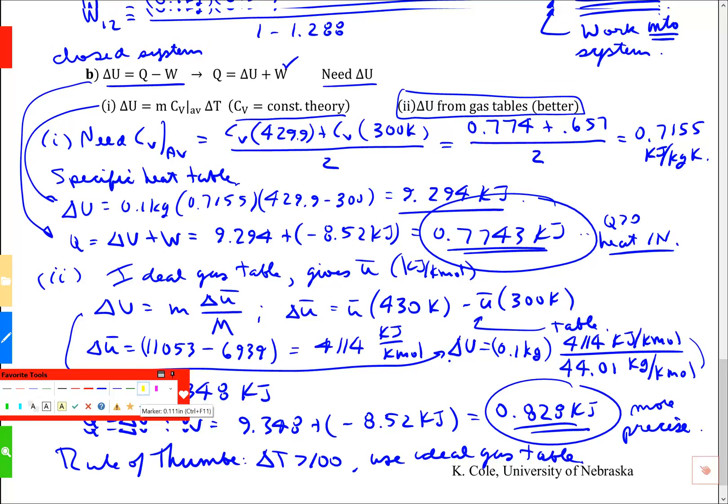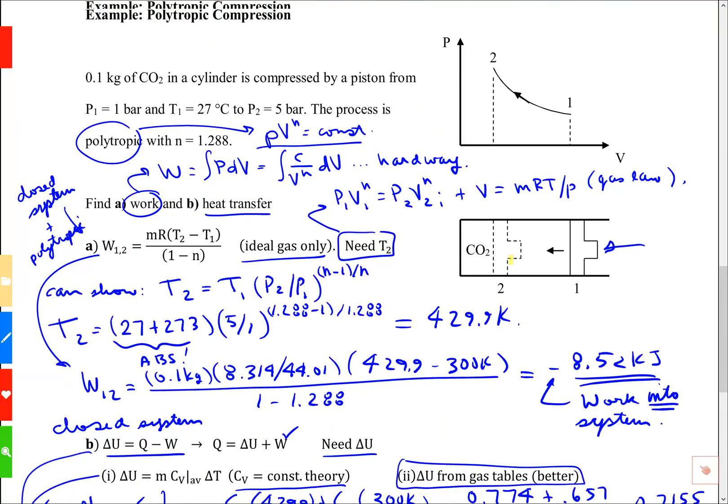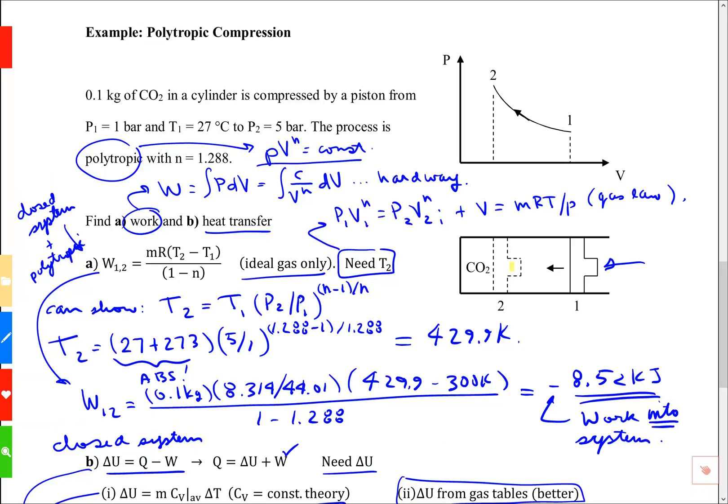Let's recap. In this problem, we're studying a polytropic compression, and polytropic is a word that means that PV to the power n is a constant. We can use that fact to develop some relationships based on ideal gas. If you use ideal gas relationships or anything built from it, you must use absolute temperature.